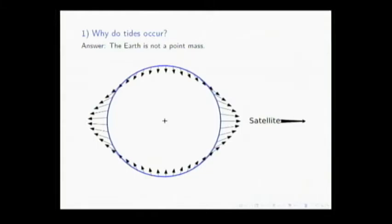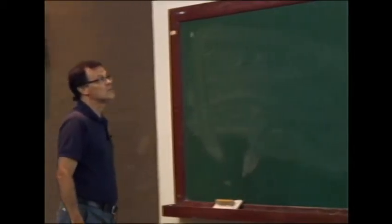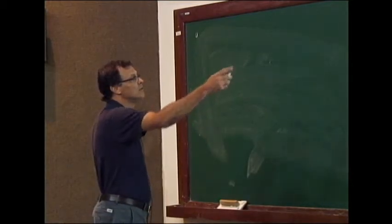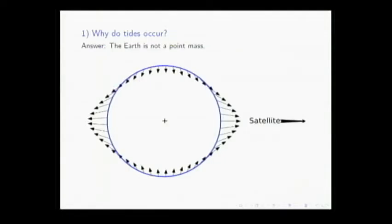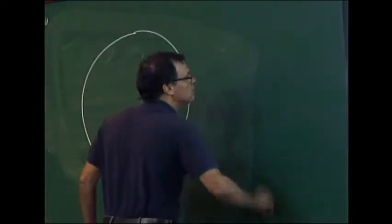Why do tides occur? They occur at the Earth because the Earth is not a point mass. Although we usually model the Earth as a point mass for celestial mechanics studies, the Earth is an extended body. The satellite — the Moon, for instance — is there, the Earth is here, and you have this deformation of the Earth. It's stretched in this direction. Here's the Earth, here's the Moon, modeled as a point mass.